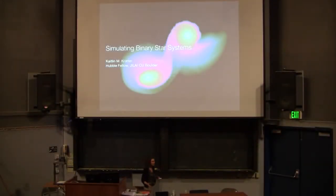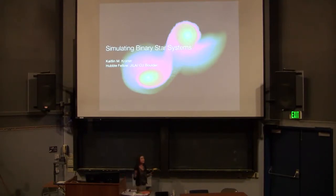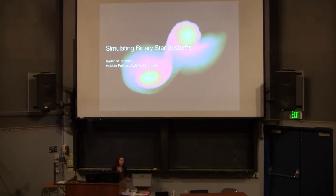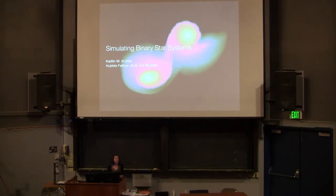I want to change pace a little bit from the talks this morning and try to give an overview of some of the considerations we need to have when we're simulating different types of systems. Today I'm going to talk about binary star systems in particular and focus on formation, since this is a star and planet formation summer school. I'm not going to talk about code details — I'll assume Tom and Patrick have covered that already — and instead we can talk about some of their advantages and shortcomings as we consider different problems.